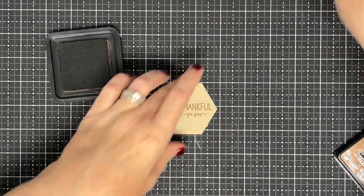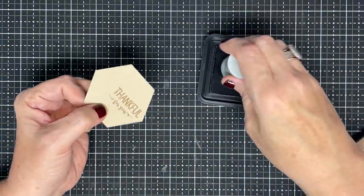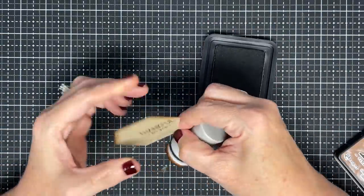Thankful for you. Super simple, just like that. Then I want to ink the edges of this little guy. Now, remember if you're using distress ink, that stays wet for a minute. So you don't want to get your hand in it. Then I'm just going to run around and ink just like so.